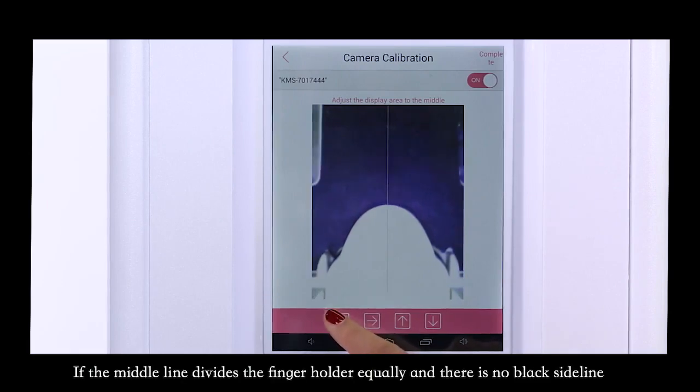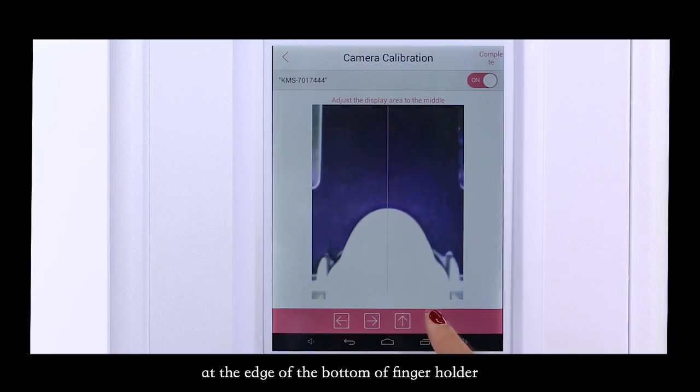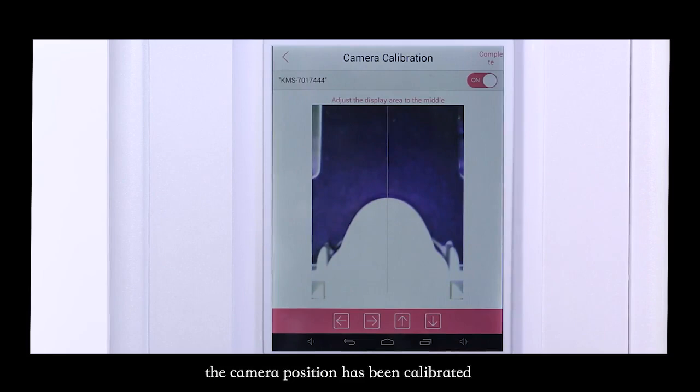If the middle line divides the finger holder equally and there is no black slide line at the edge of the bottom of the finger holder, the camera position has been calibrated.